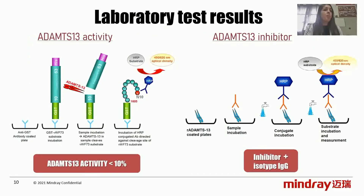From what has been explained, due to the preserved renal function and severe thrombocytopenia, TTP is suspected. To confirm it, we proceeded to study ADAMTS13 activity by a chromogenic ELISA. ADAMTS13 activity was less than 10%. Against this value, the presence of an inhibitor was studied by another chromogenic ELISA from the same laboratory. The result was positive for the IgG isotype. Given this, we can confirm that the patient is experiencing immune-mediated thrombotic thrombocytopenic purpura with no identifiable triggering cause, so we call it idiopathic iTTP.